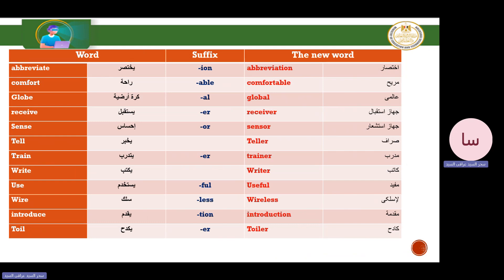Now we'll look at suffixes. The endings -ion, -able, and -al change the meaning or part of speech of a word. For example: abbreviate (verb) + -ion = abbreviation (noun); comfort + -able = comfortable (adjective); globe + -al = global; receive + -er = receiver; sense + -or = sensor; tell + -er = teller; train + -er = trainer; write + -er = writer; use + -ful = useful; wire + -less = wireless; introduce + -tion = introduction; tile + -er = tailor.